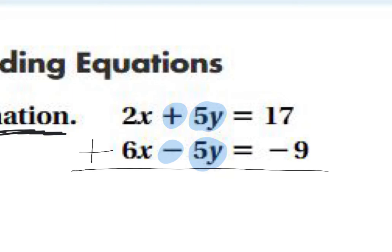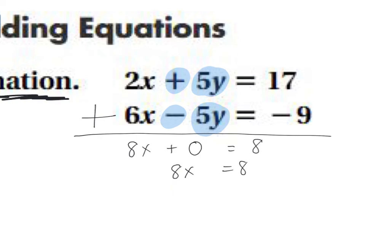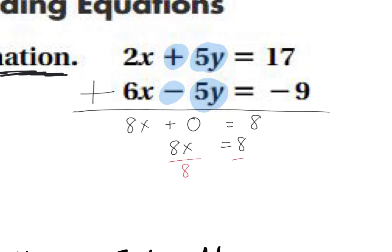Everything from the top is added with everything on the bottom. We take 2x + 6x, which gives us 8x. We take +5y − 5y, which gives us 0. Then 17 + (−9) gives us 8. So since we're using elimination, what did we just eliminate? — y, very good. We eliminated y. Now we've just got 8x = 8, so divide both sides by 8: x = 1.